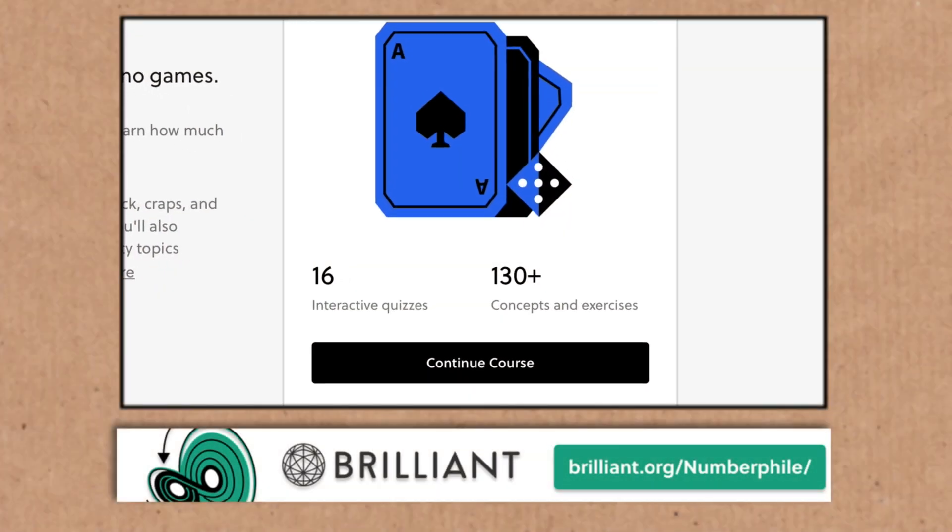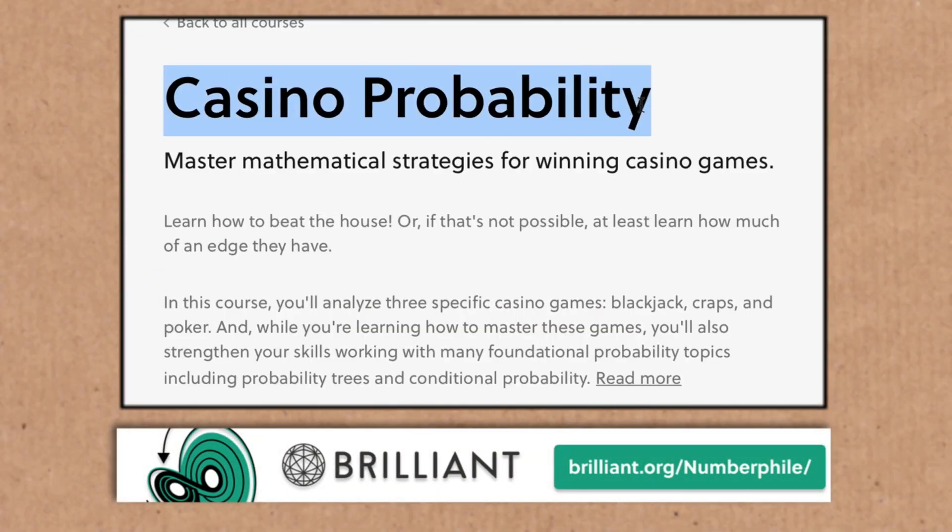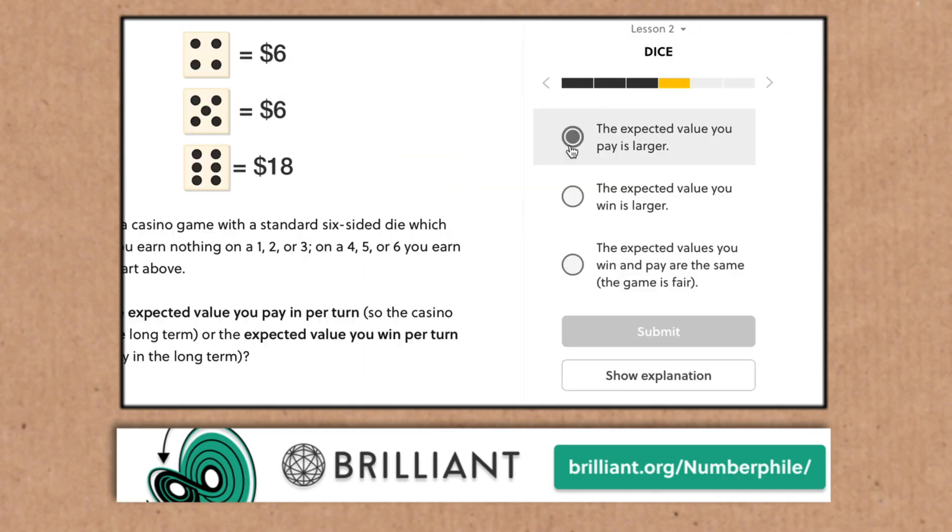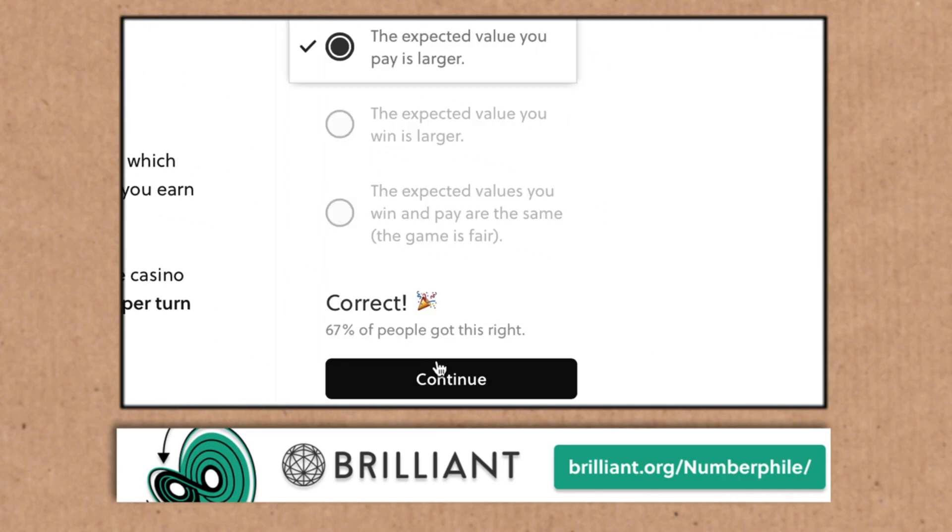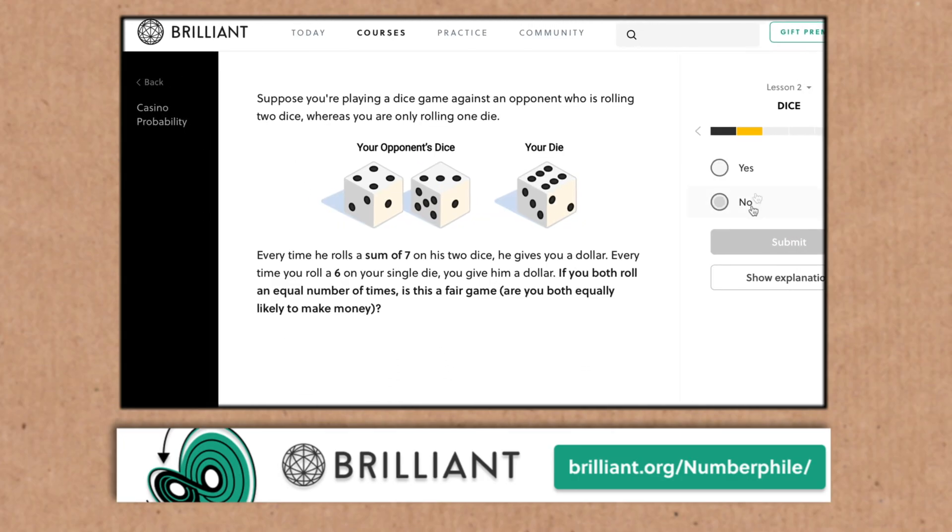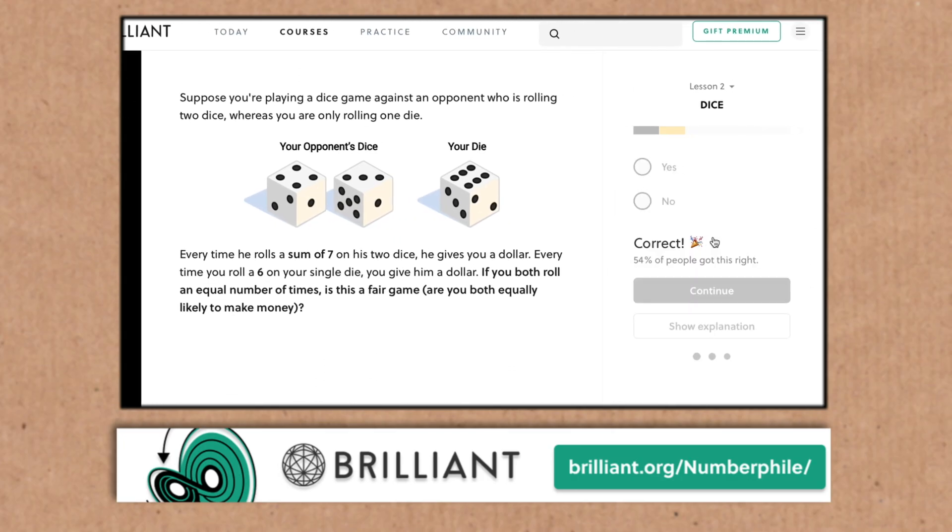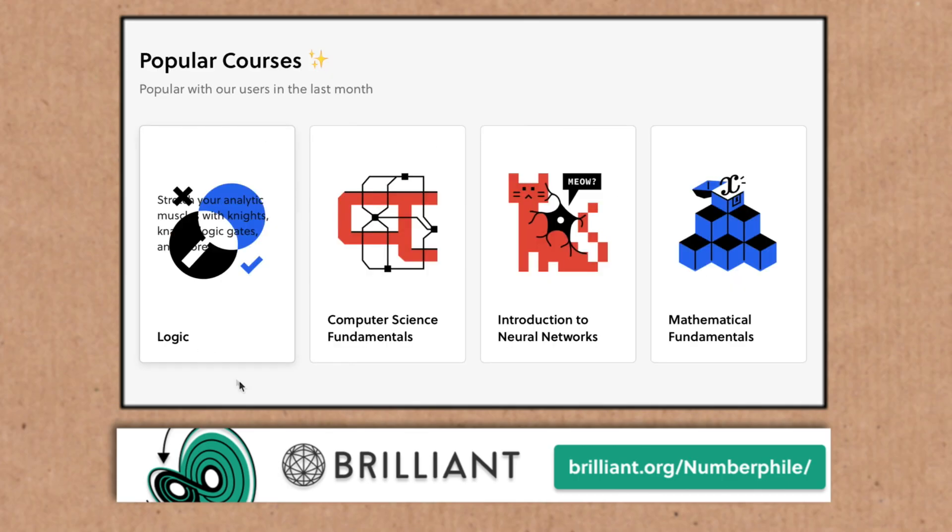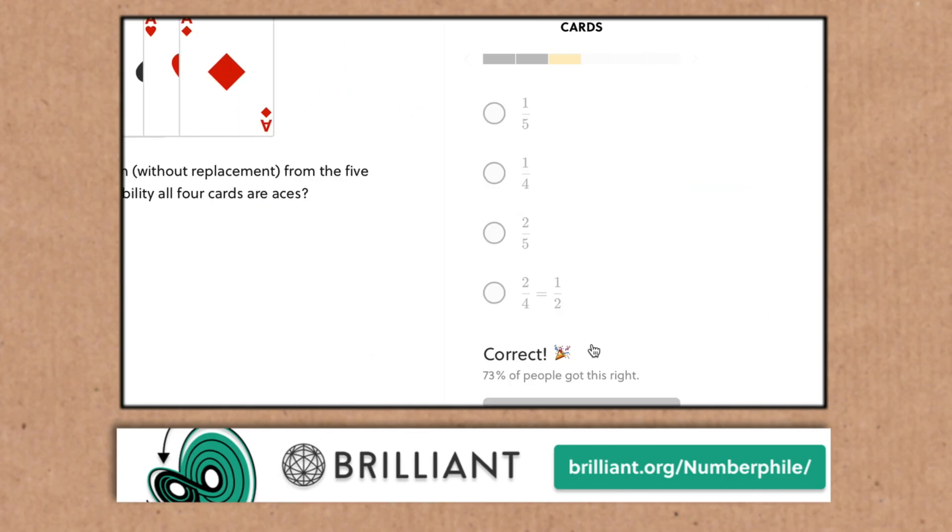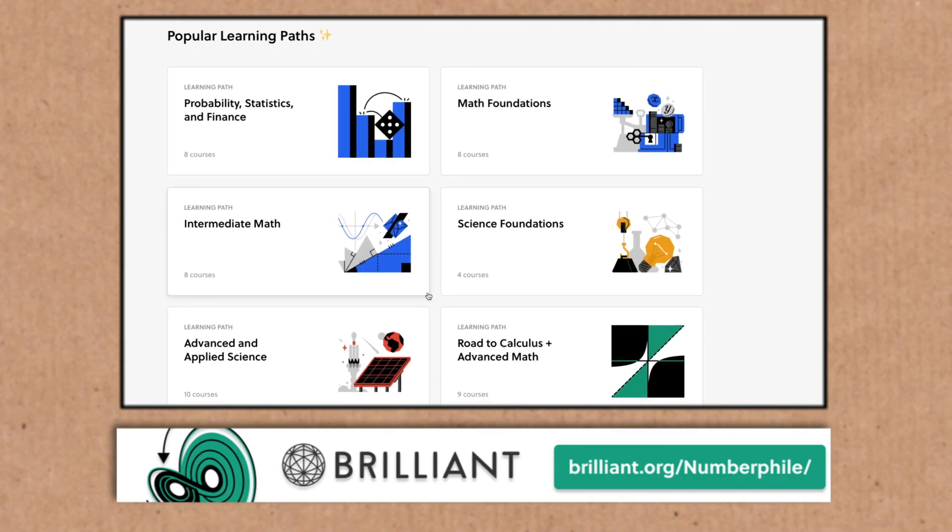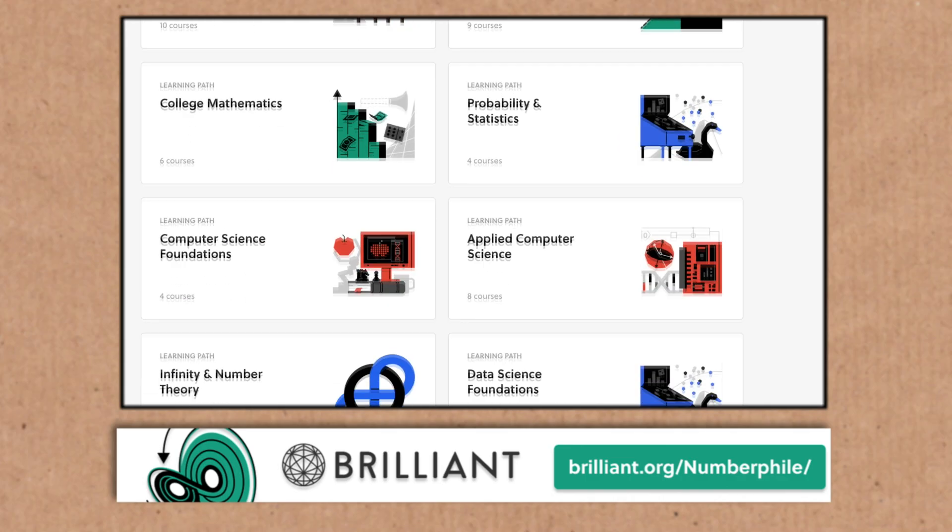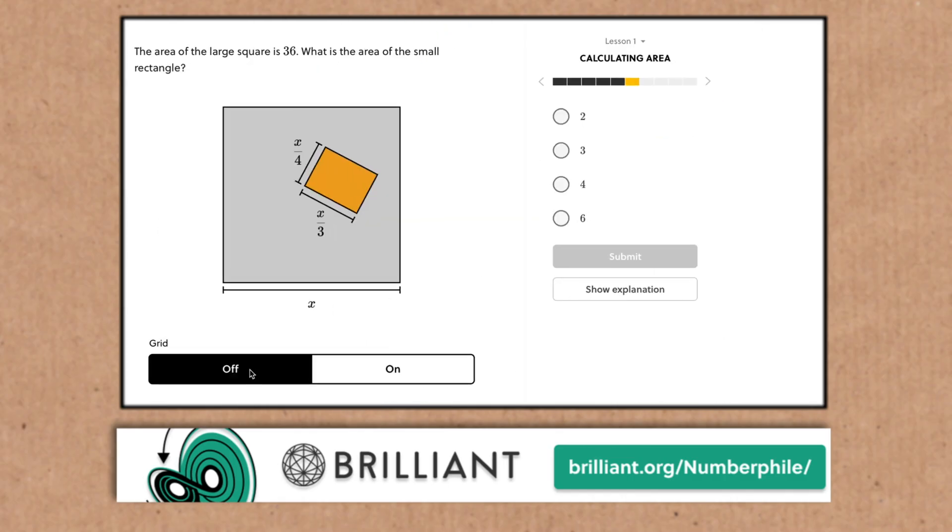Brush up on your dice mathematics as part of this casino probability course on Brilliant, today's episode's sponsor. Now, it doesn't matter if you get things right or occasionally wrong, you're always learning with Brilliant's fantastic quizzes and puzzles and their deep dive courses. I do really enjoy doing these. Interactive, gets my brain turning.